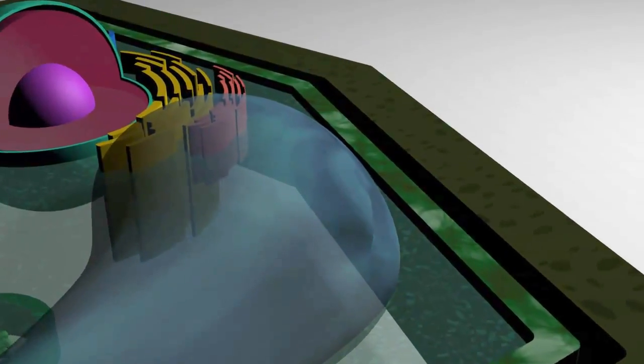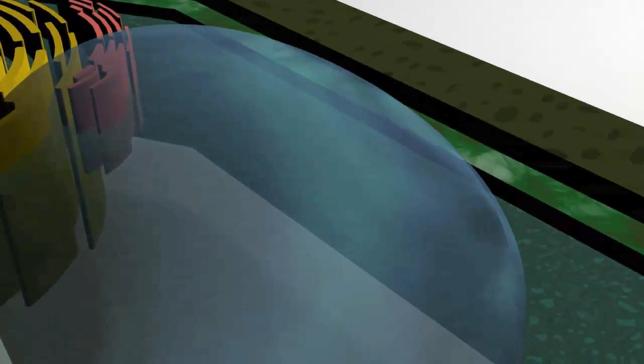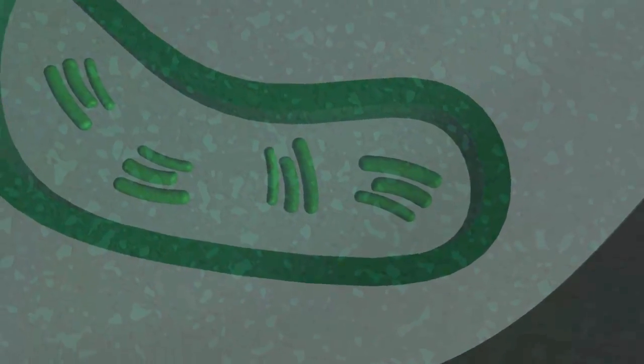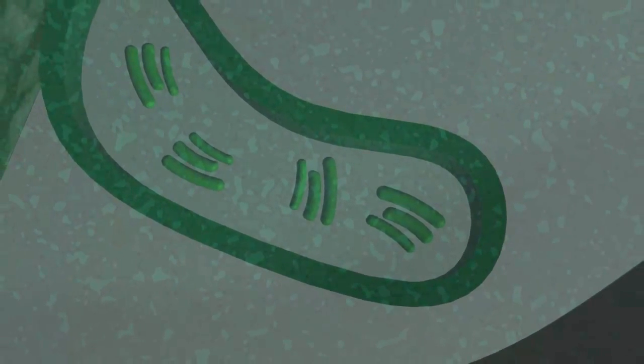Since plants and algae do not obtain energy from other organisms, an organelle supplies energy to the cell by converting energy from the sun into usable energy by the cell with a process called photosynthesis. The organelle is called chloroplast and is located within the cytoplasm of the cell.